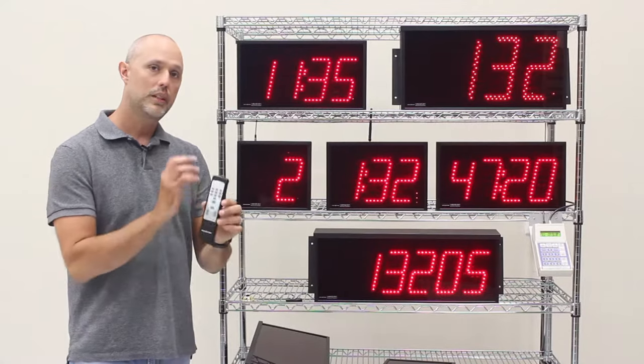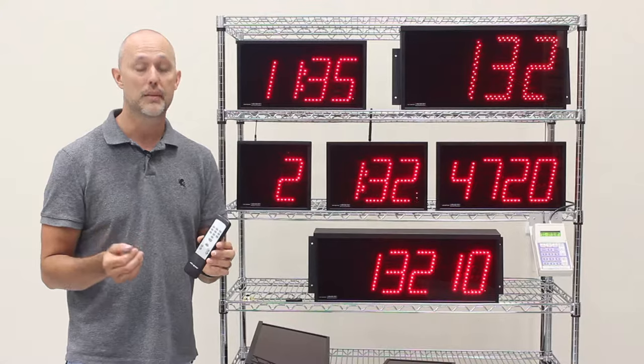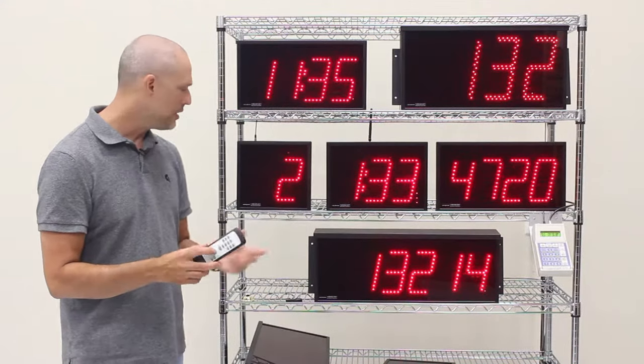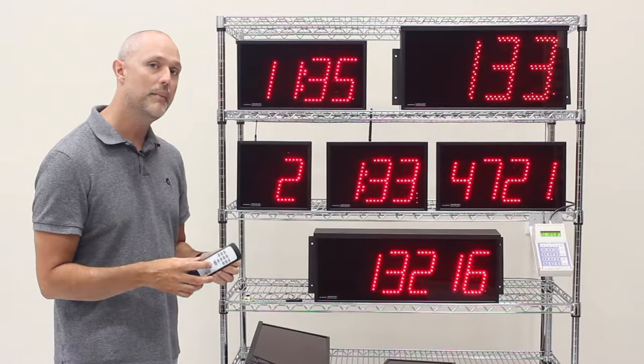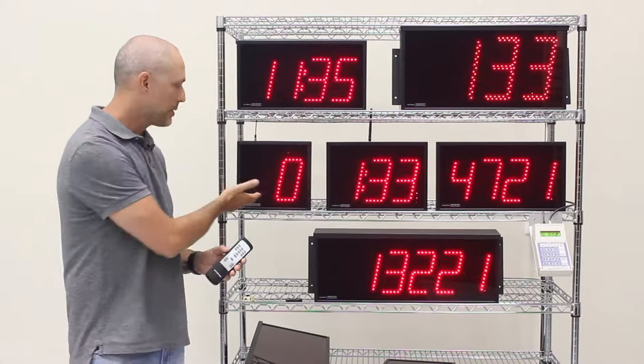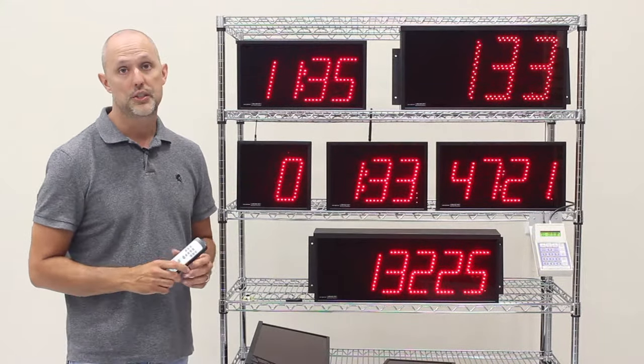Not only can you go into the menu settings and set up all the parameters, count up, count down, when to chime, you can actually use it to count down and count up. And as you can see there's an internal chime built into every display in the 6300 series. This one was programmed to chime at zero. There's a couple other chime times that you can set.